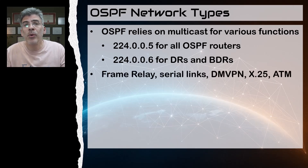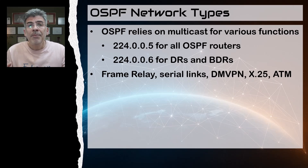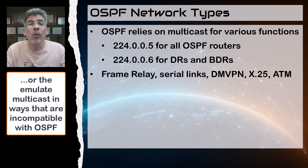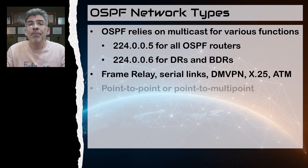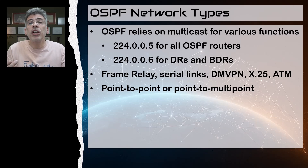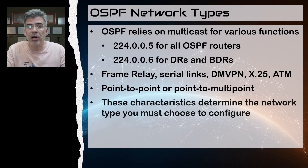For example, frame relay, serial links, DMVPN, X.25, and ATM are technologies that require OSPF to tweak the way it works, because these technologies either don't support multicast or they emulate multicast in specific ways that may not be compatible with OSPF by default. Even the type of topology — such as point-to-point or point-to-multipoint like a hub-and-spoke — will affect your choice of OSPF network type. The combination of the underlying network technology and topology will determine the network type you need.